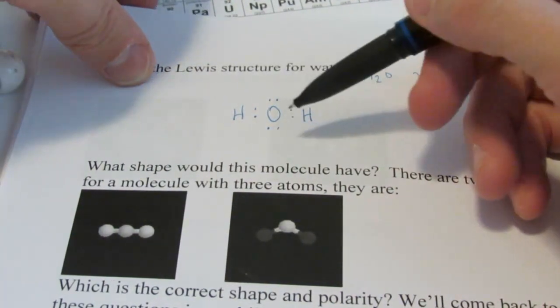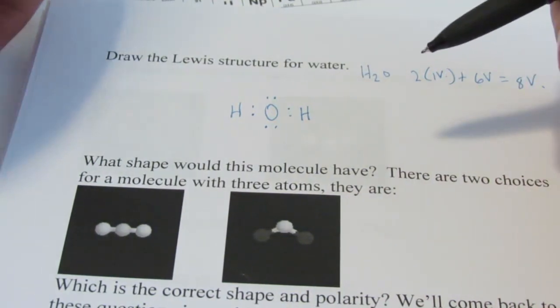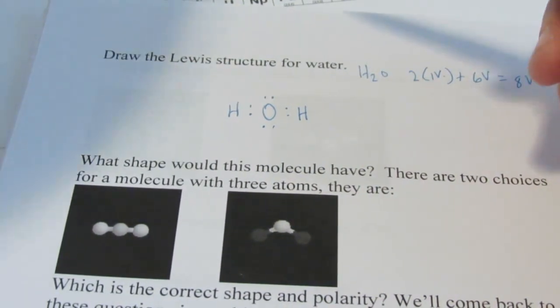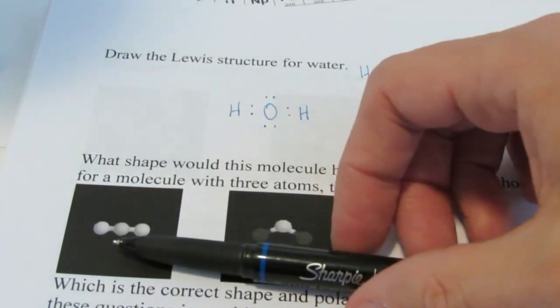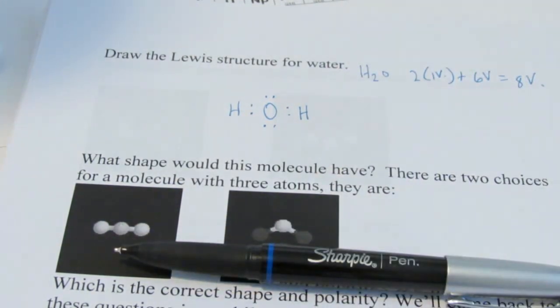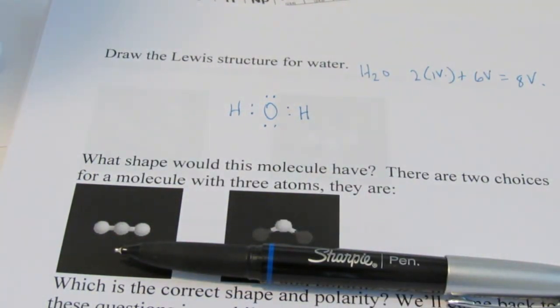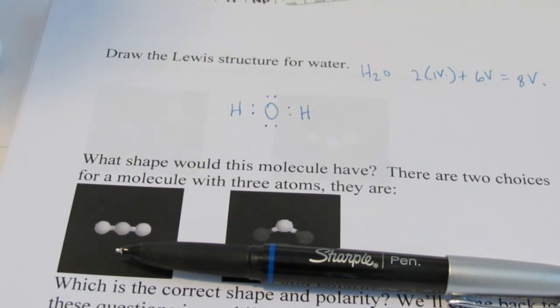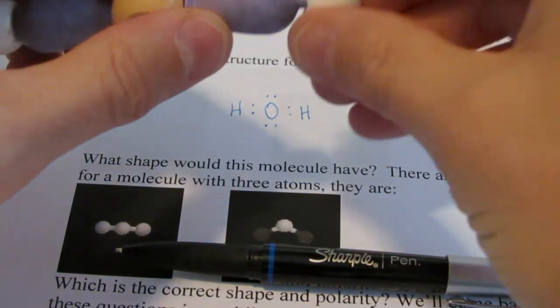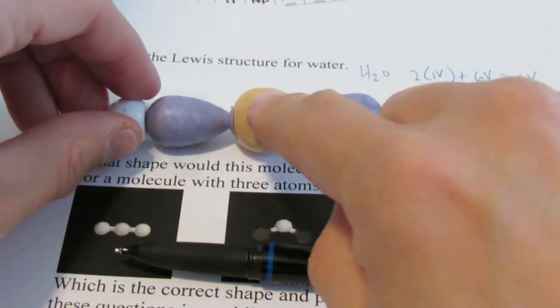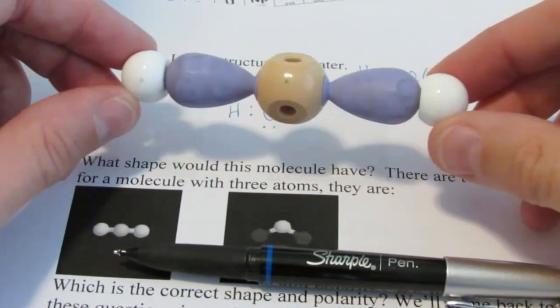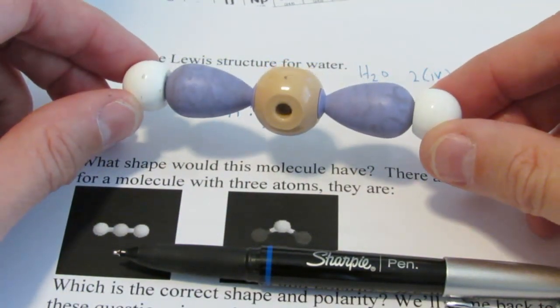Now, it's time to discuss shape. What shape would this molecule have? Well, the way it's drawn, a lot of folks say that it would have a linear arrangement. Now, let me show you what that would mean. If it were linear, it would just be oxygen in the center with a hydrogen on either side. We'd have this linear shape.